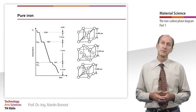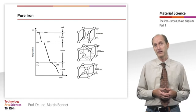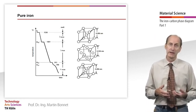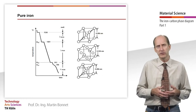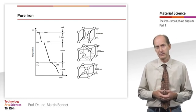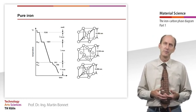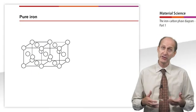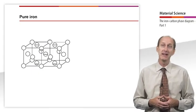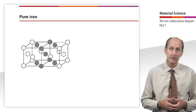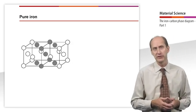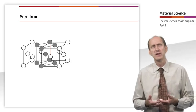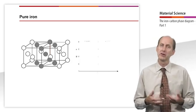For iron, the Curie temperature is at 769 degrees Celsius, so that the thermal analysis shows a discontinuity at this point. However, another lattice transition does not occur. The transition at the arrest point Ar3 at 911 degrees Celsius, that is to say the transition from gamma to alpha iron, is of particular importance.